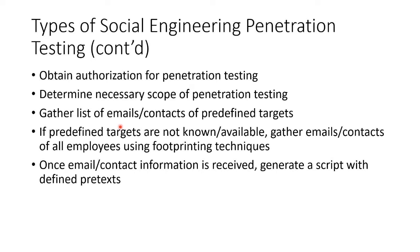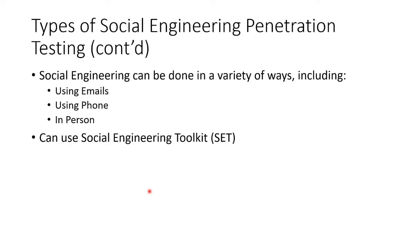If the predefined targets are not known or not available, you gather emails and contacts of all employees using the foot printing we've talked about. Once you have all that, you can generate a script with predefined pretexts. You can do your social engineering by email, by phone, or in person. There are many tools — Metasploit Pro has one, the Social Engineering Toolkit has one, and there are more than just those.